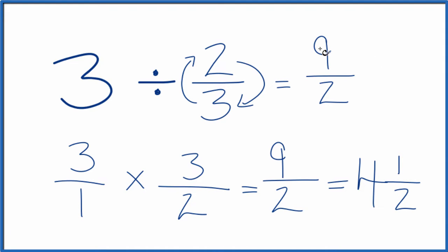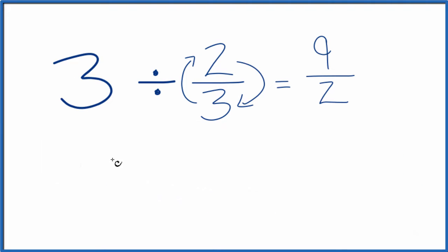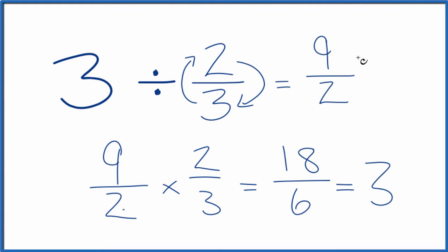We can multiply 9 over 2 times 2 thirds, and we should get 3. Let's do that. So we have 9 over 2, we multiply that by 2 thirds, and we should get 3. 9 times 2 is 18, 2 times 3 is 6. 6 goes into 18 three times. So we did this correctly.